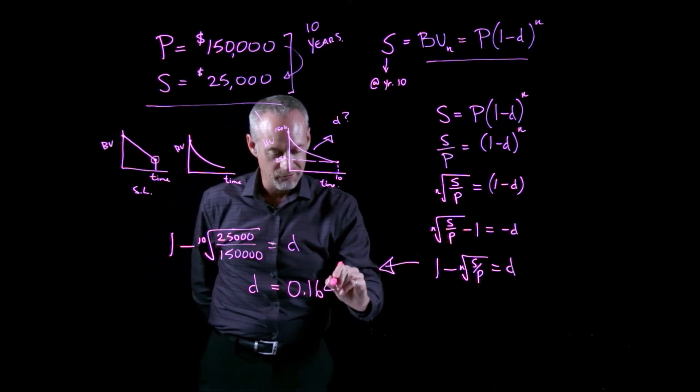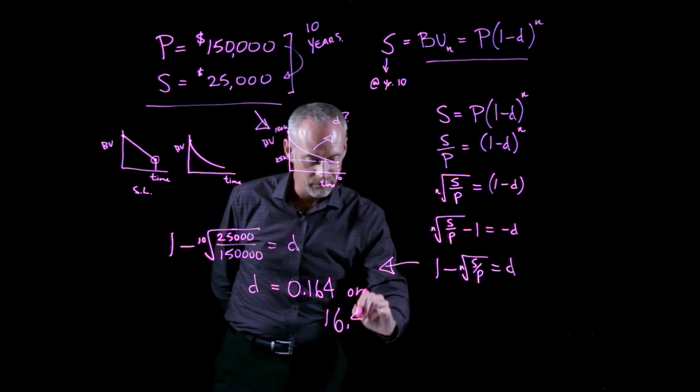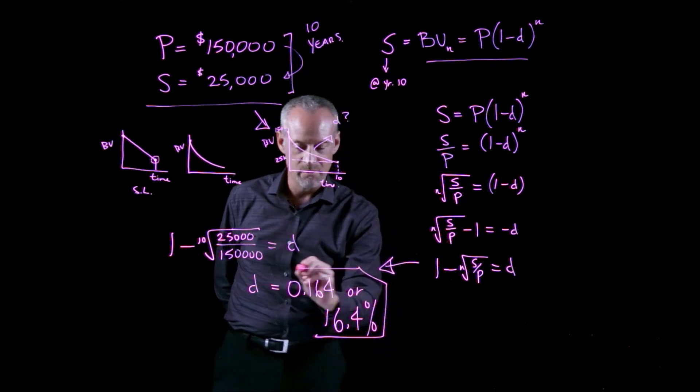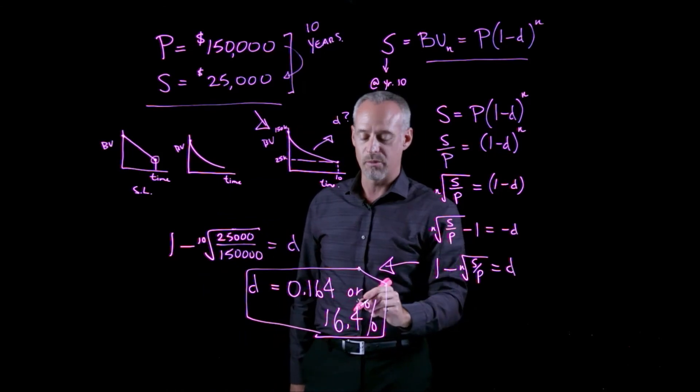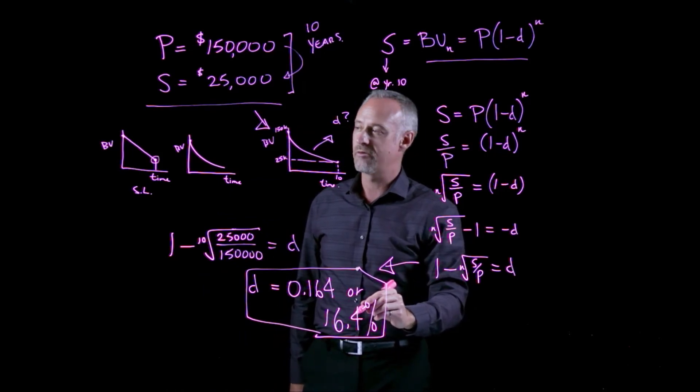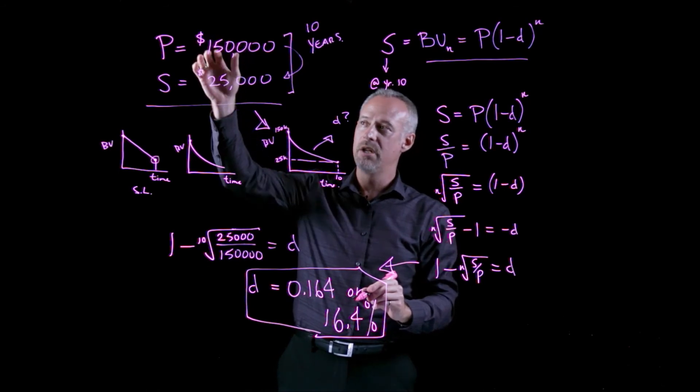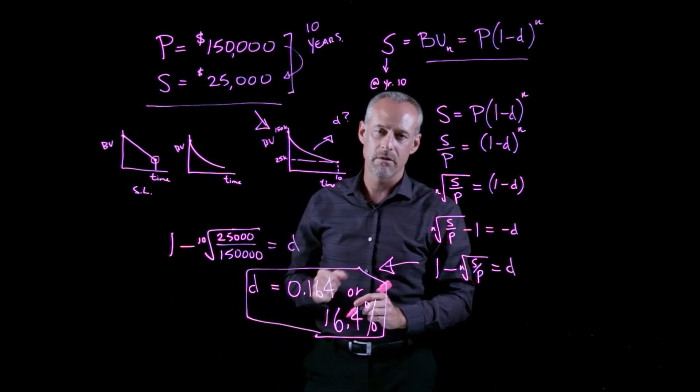And you should arrive at a number d is equal to 0.164 or 16.4%. So the solution to the problem is that a depreciation rate of 16.4% takes me from a book value of 150,000 at time t equal to 0 to a book value of exactly 25,000 at the end of year 10.